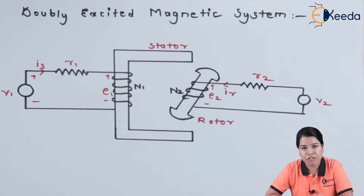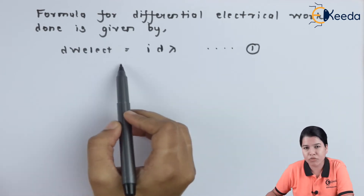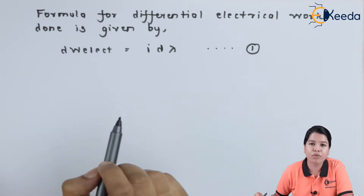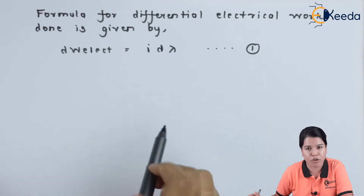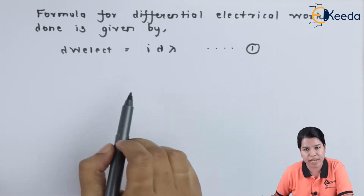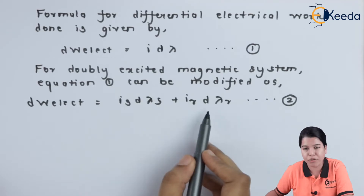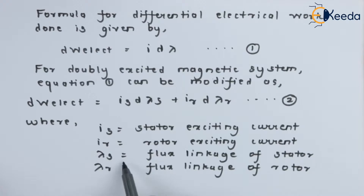I1 or IS is the current flowing through the stator coil, and I2 or IR is the current flowing through the rotor coil. We know the formula for differential electrical work done is dW_electrical = I · dλ. For the doubly excited magnetic system, we must consider the flux linkages of both exciting coils. Hence this equation is modified as: dW_electrical = IS · dλS + IR · dλR, where IS and IR are the stator and rotor exciting currents, and λS and λR are their respective flux linkages.